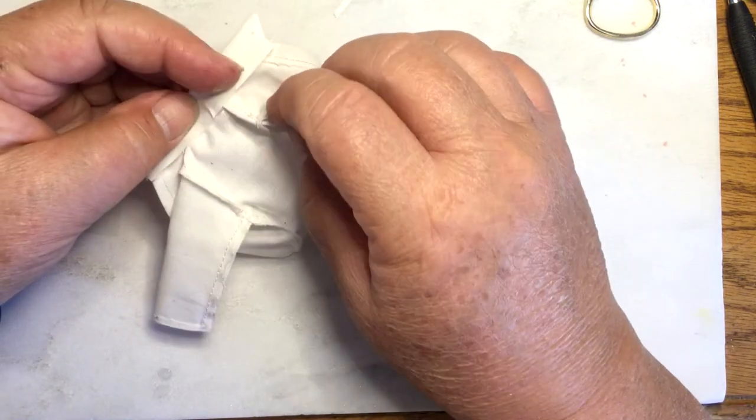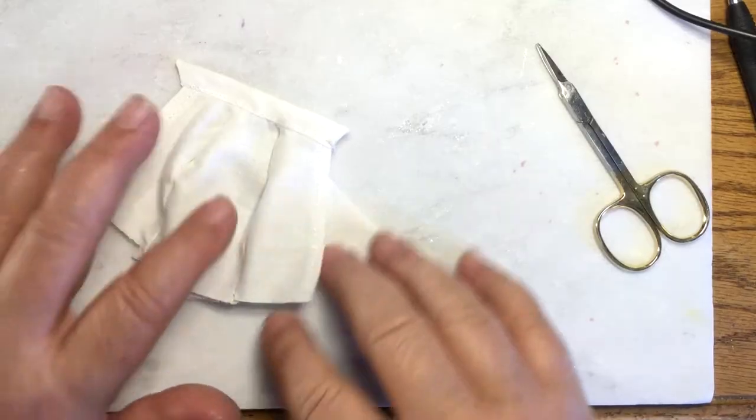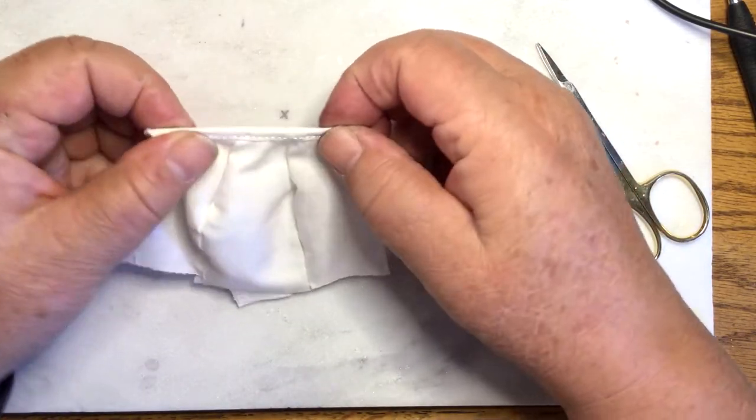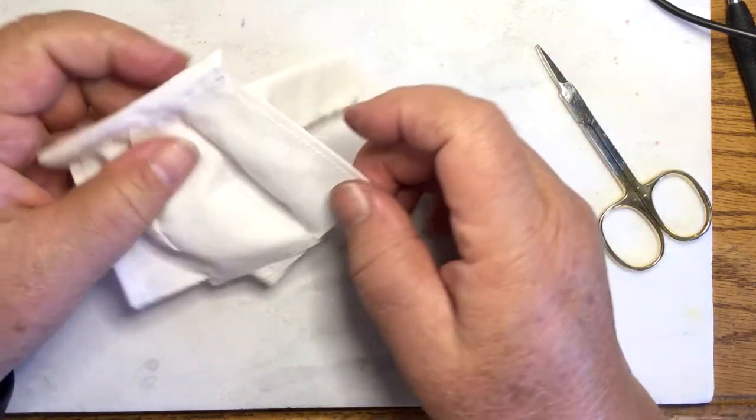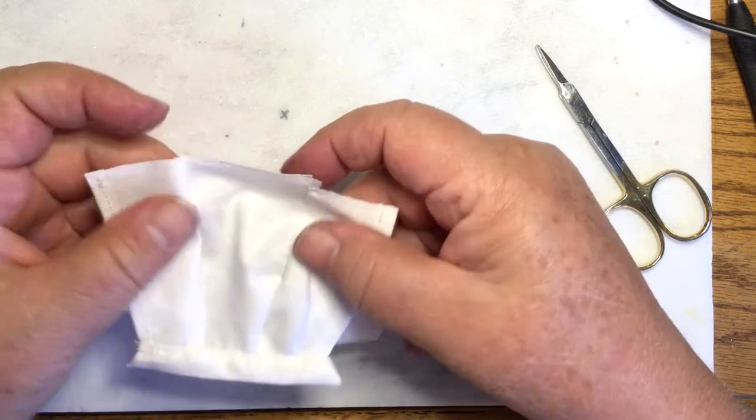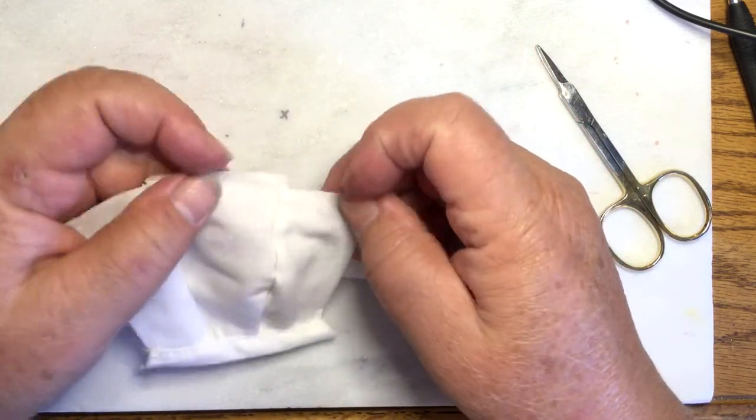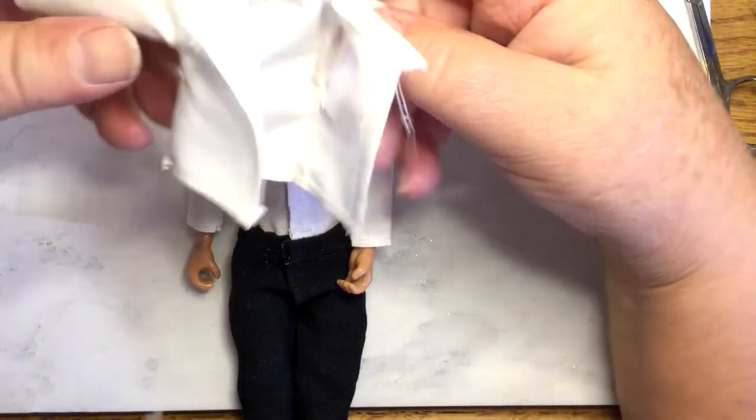Now you could fold this under and then sew it. All right, we've got that, and now what we do have to do of course is fold it back and iron it really good so it stays that way. But first I will hem the bottom, and you're going to hem it of course this way.